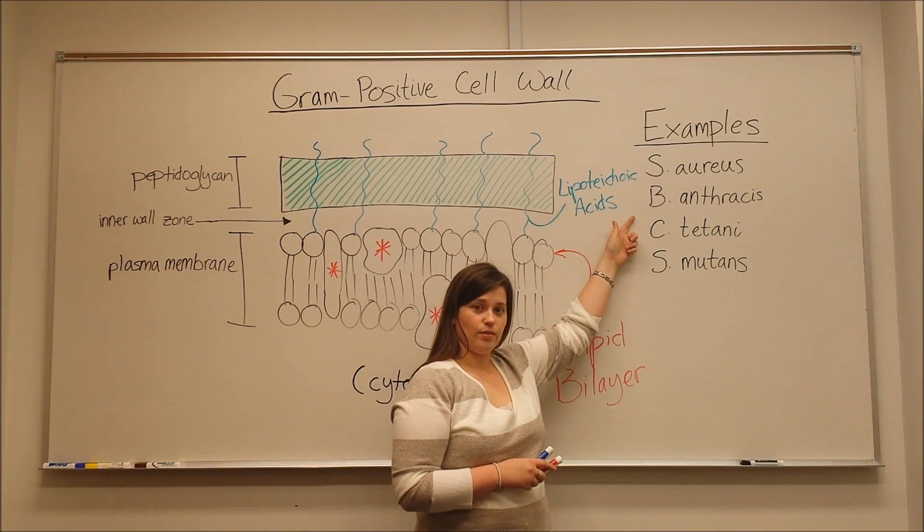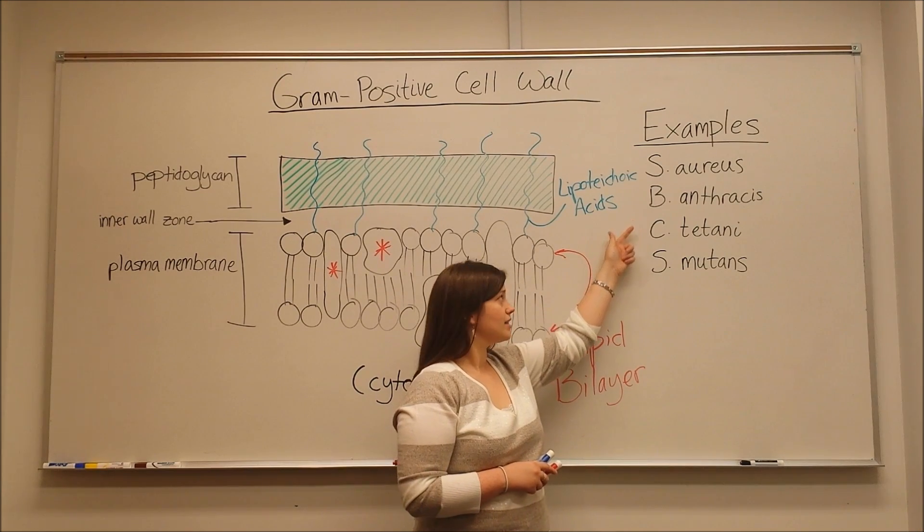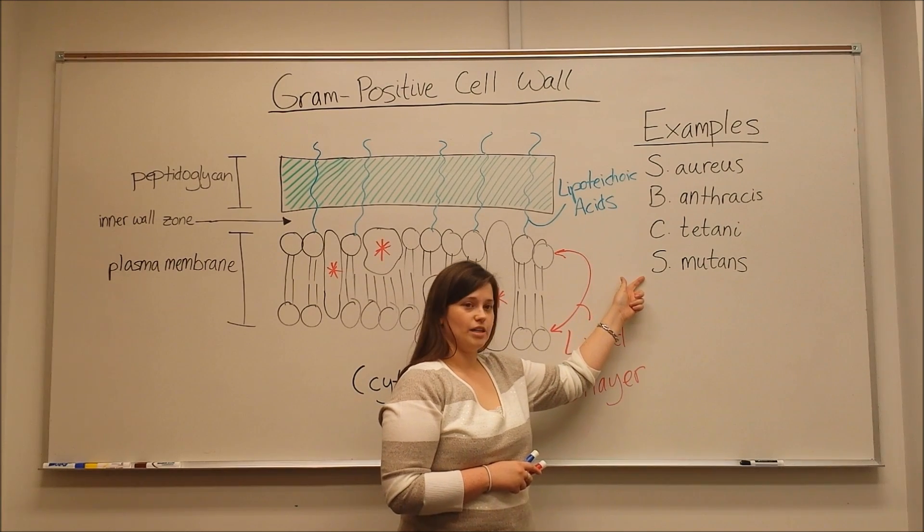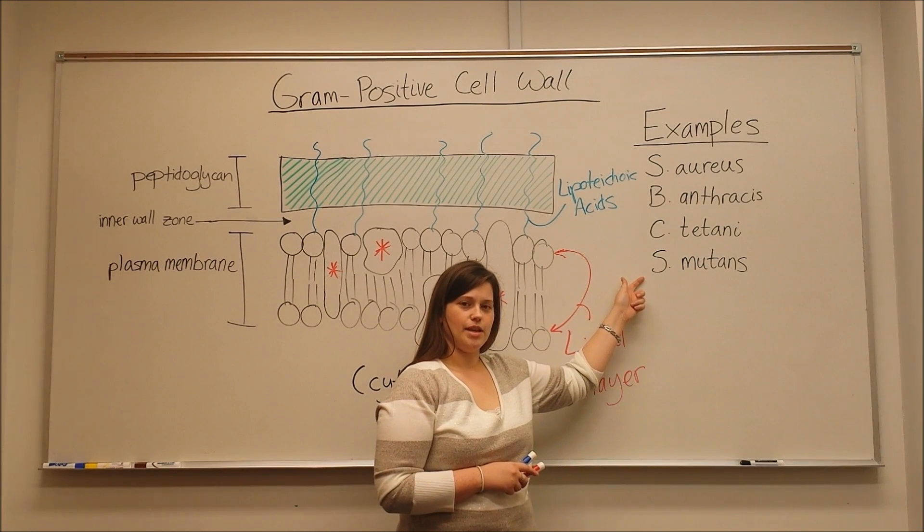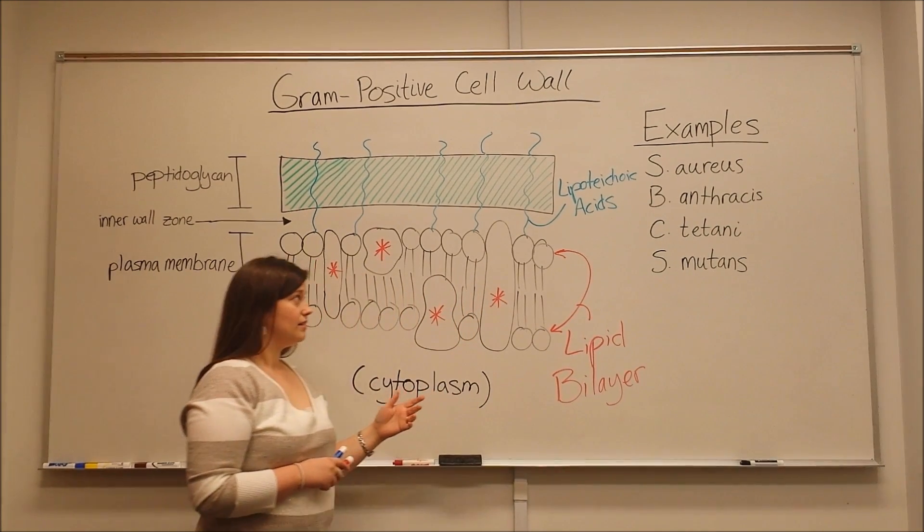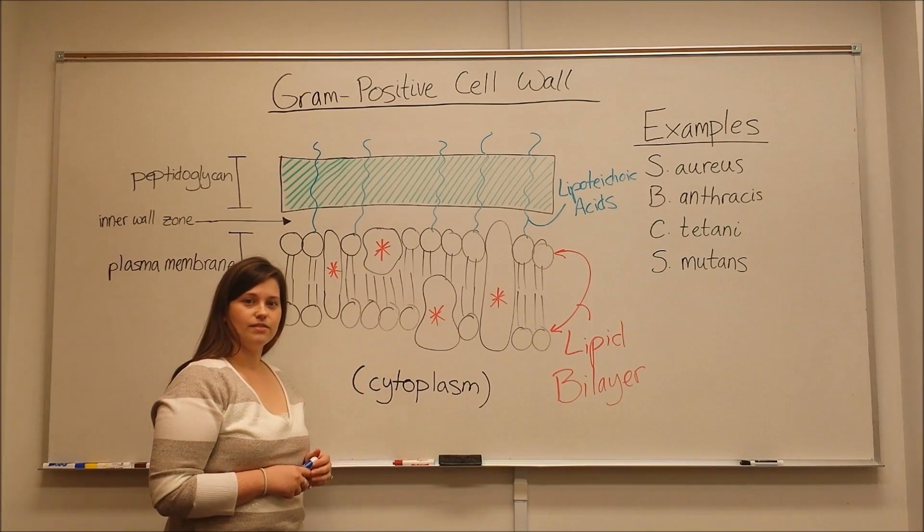There's also bacillus anthracis, which causes anthrax. Clostridium tetani, which is responsible for tetanus. And streptococcus mutans. This is usually associated with cavities in the mouth. So this is the structure of a gram positive cell wall.